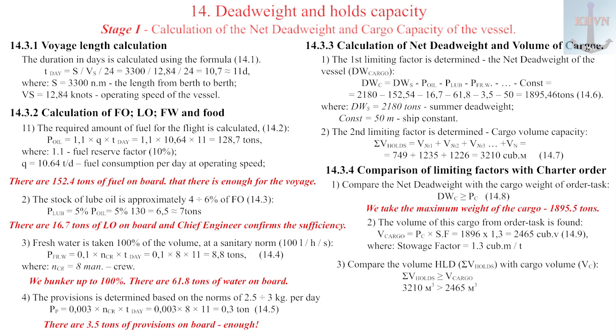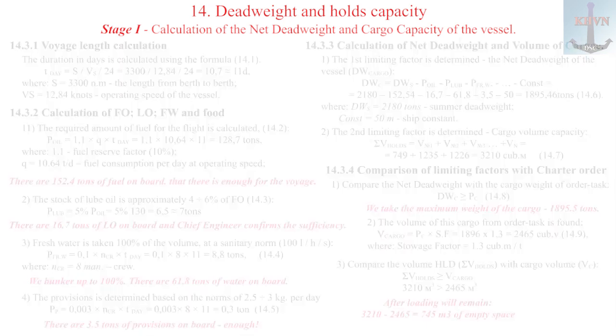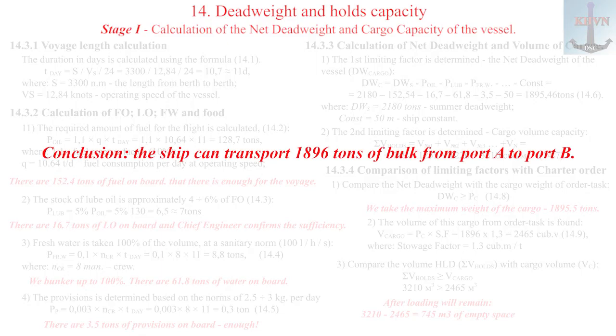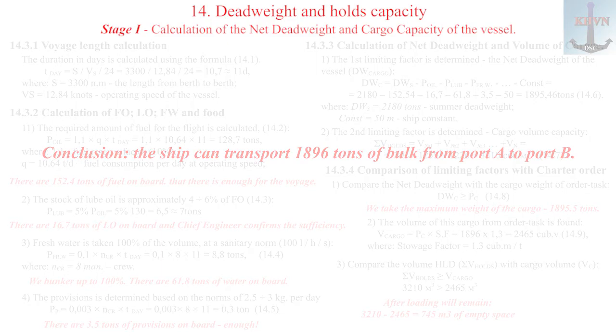Conclusion, the capacity of cargo holds does not limit us in any way. After loading will remain 745 cubic meters of empty space. General conclusion, the ship can transport 1896 tons of bulk from port A to port B.